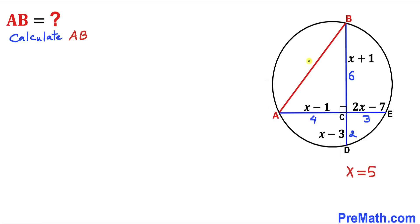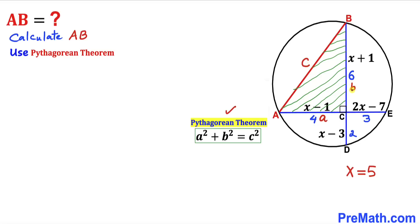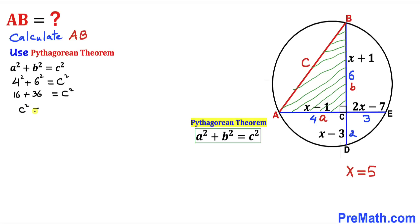Here's our final step: let's calculate the length of AB. We focus on the right triangle ACB and use the Pythagorean theorem: a squared plus b squared equals c squared. The longest leg is side c; side a is 4 and side b is 6. Filling in: 4 squared plus 6 squared equals c squared, giving us 16 plus 36 equals c squared, so c squared equals 52.